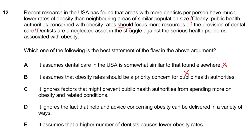Option C — 'it ignores factors that might prevent public health authorities from spending more on obesity-related conditions' — this doesn't really undermine the core argument. Option D — 'it ignores the fact that help and advice concerning obesity can be delivered in a variety of ways' — not really relevant to the flaw identified. Option E — 'it assumes that the high number of dentists causes lower obesity rates' — this is clearly the winner because it directly names the correlation-equals-causation assumption. Therefore E is the correct answer. Hopefully that makes sense and we look forward to seeing you in the next video.